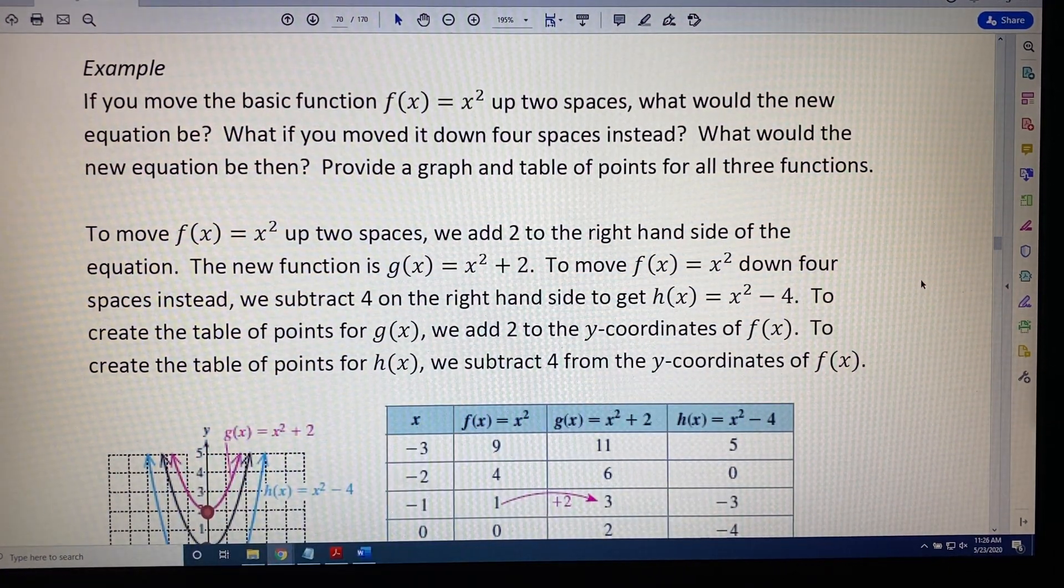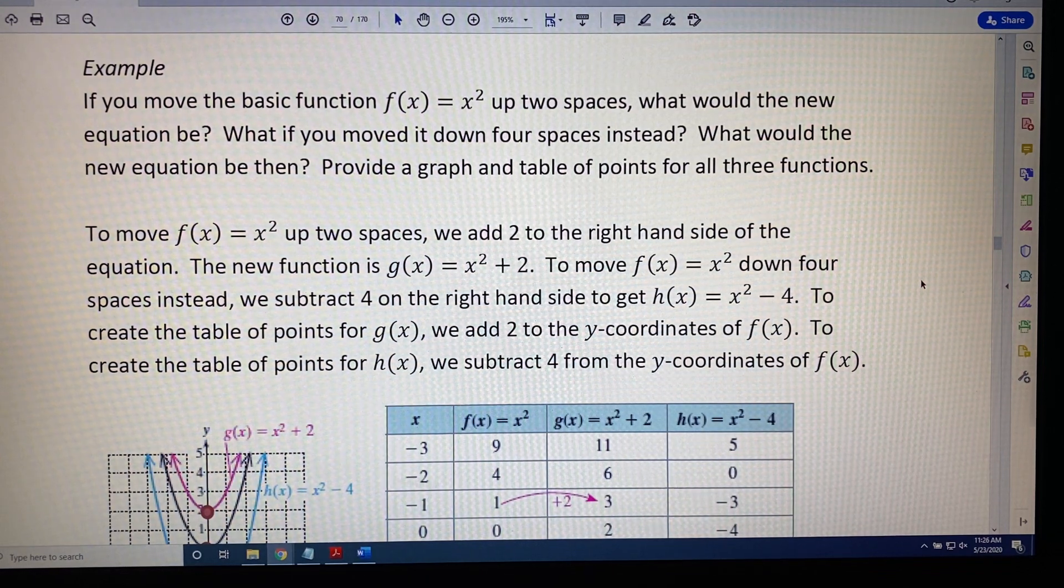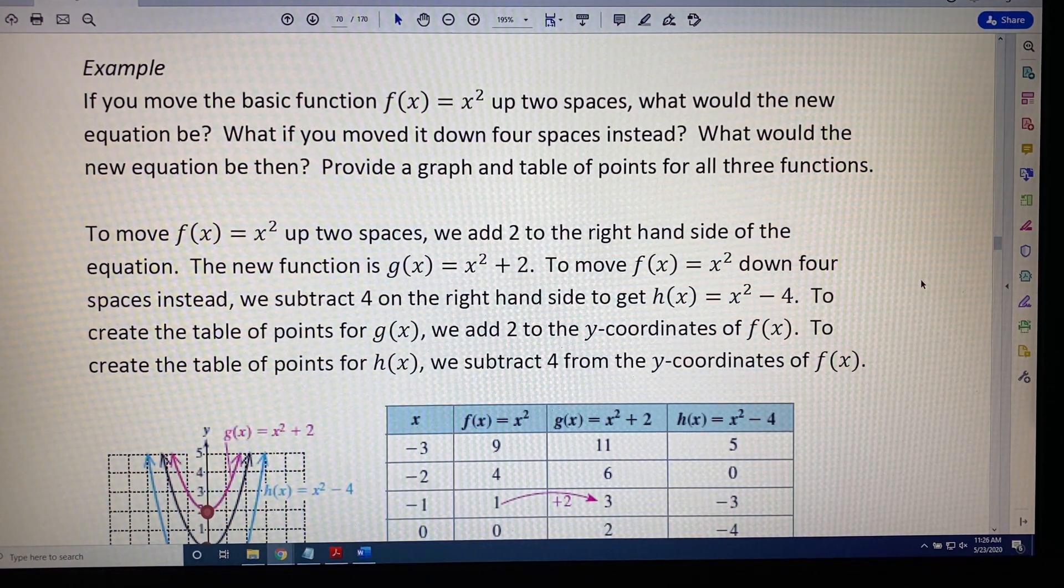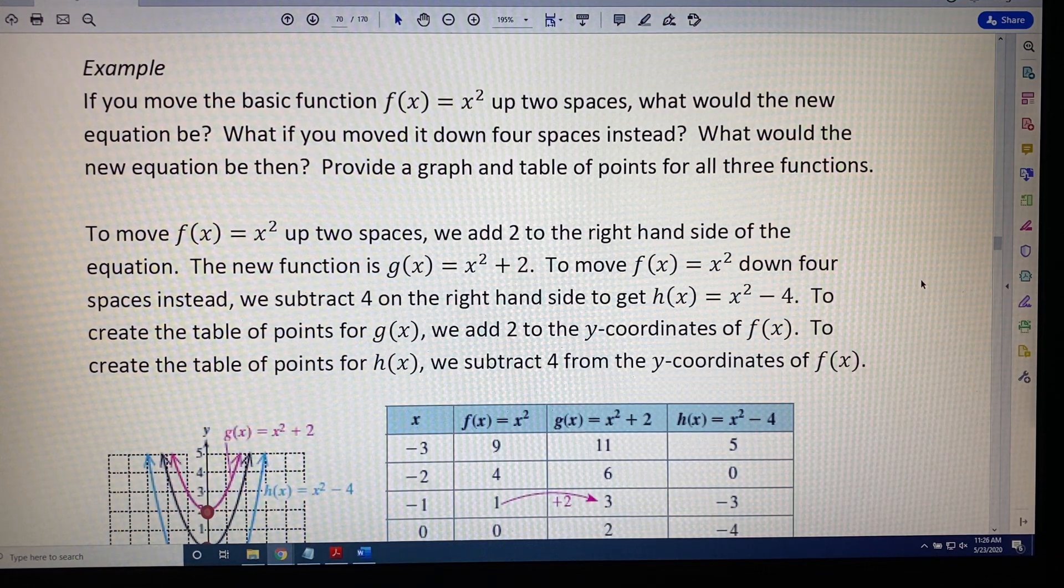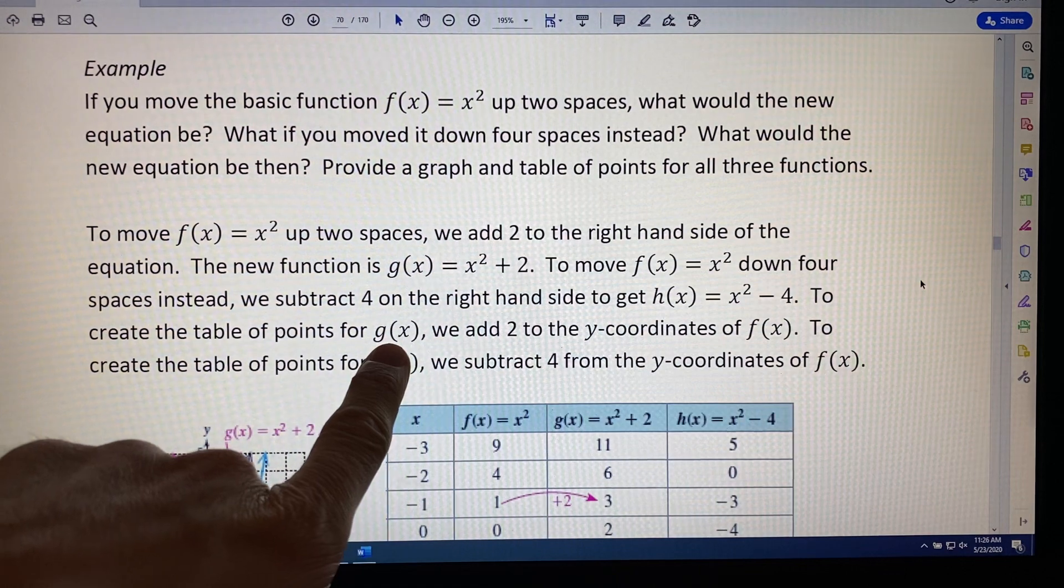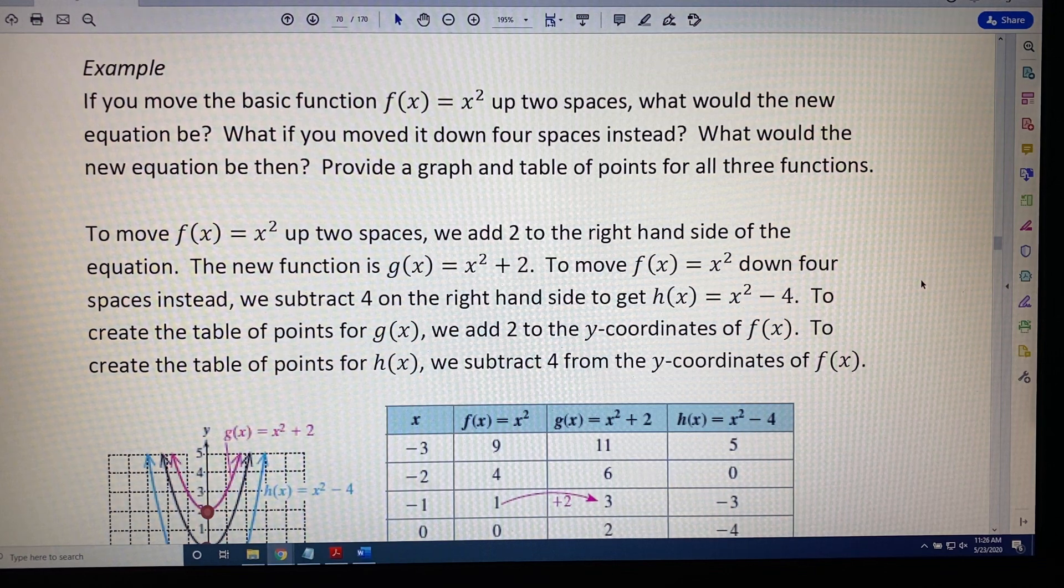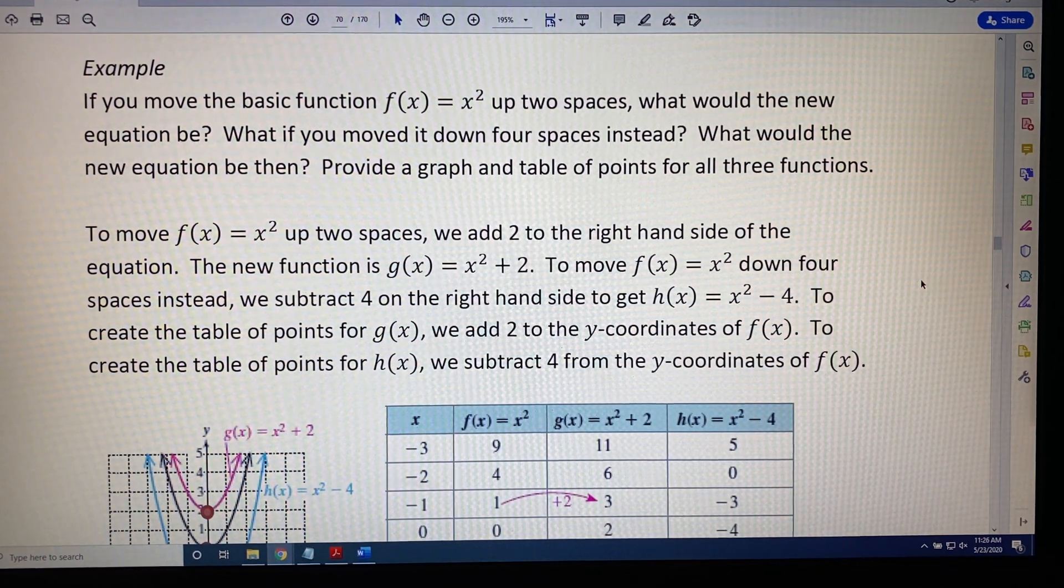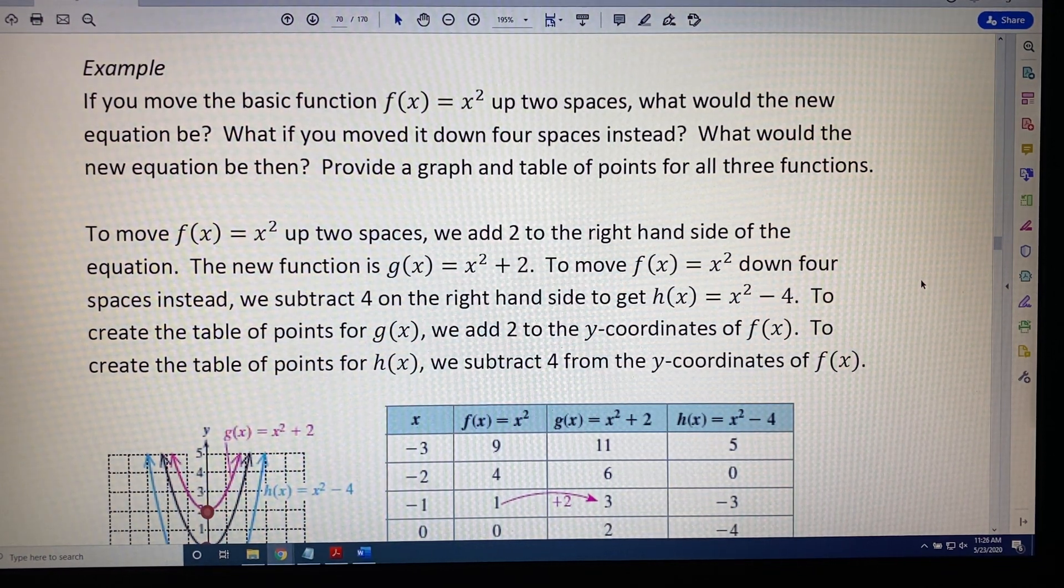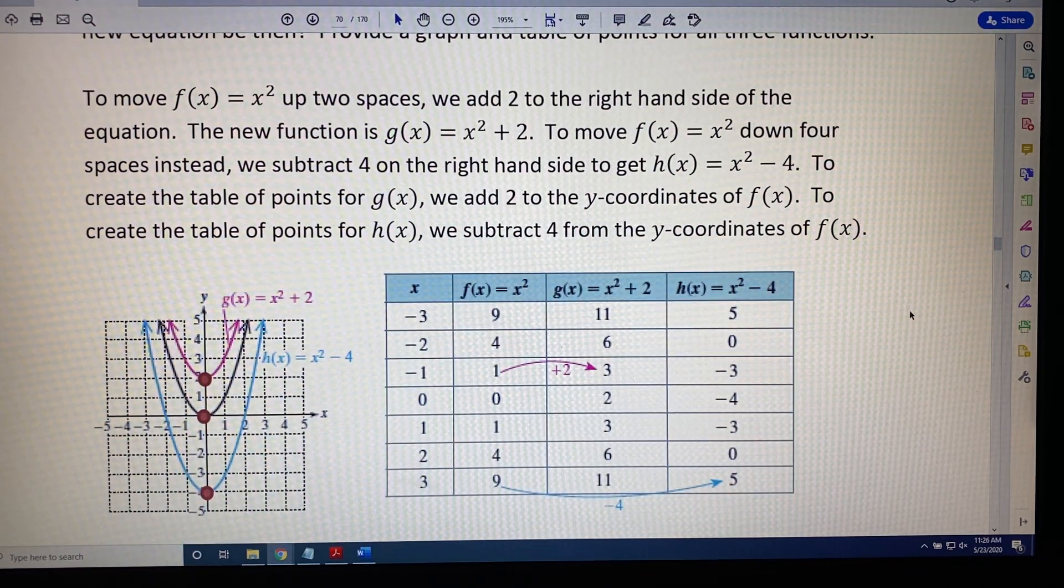To create the table of points for our two new functions, g(x) and h(x), we just need to add or subtract the y-coordinates respectively. For example, to create the table of points for g(x), we add 2 to the y-coordinates of f(x). And to create the table of points for h(x), we subtract 4 from the y-coordinates of f(x). Let's look at this in graph and table form.